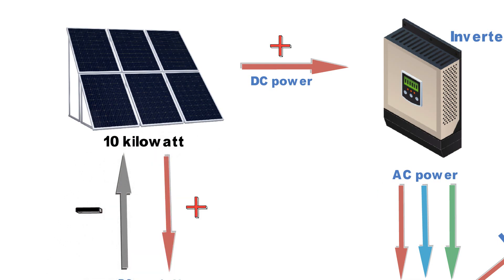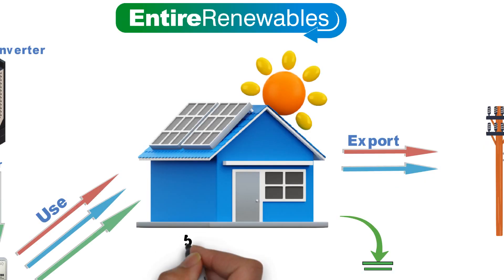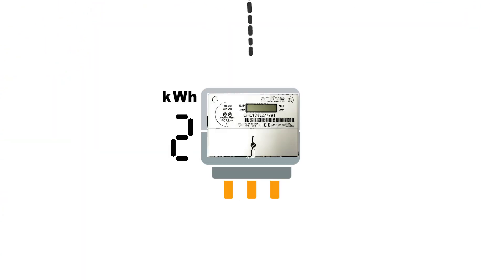If the solar panels make 10 kilowatts of power this will all go to the battery until you are ready to use it. Let's now say the house wants to use 5 kilowatt hours of power. This will pass through the inverter and then through the bi-directional net generation meter and register 5 kilowatt hours on the digital screen.